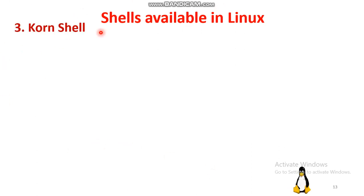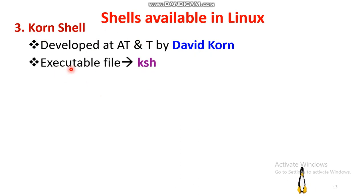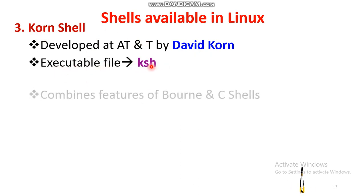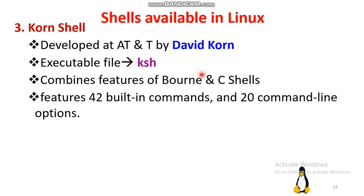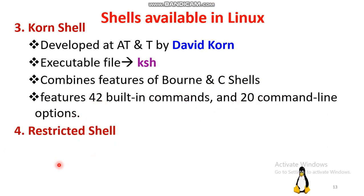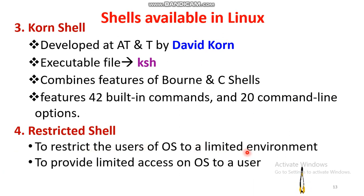The third type is the Korn shell, developed at AT&T Laboratories by David Korn. The executable file is 'ksh'. It combines the features of the Bourne and C shells, and has 42 built-in commands and 20 command line options. The fourth type is the restricted shell, which restricts users to a limited environment, providing only limited access rather than full rights.